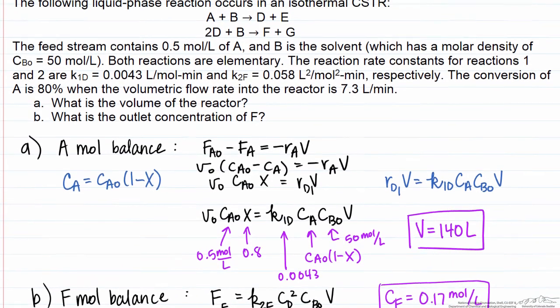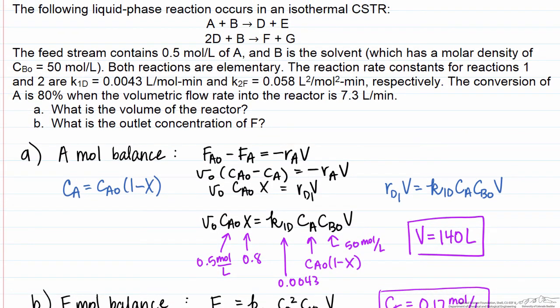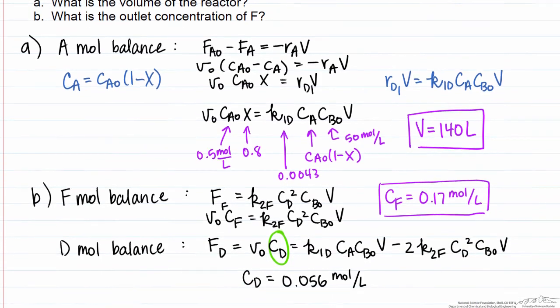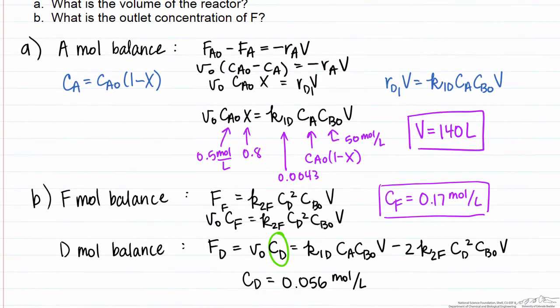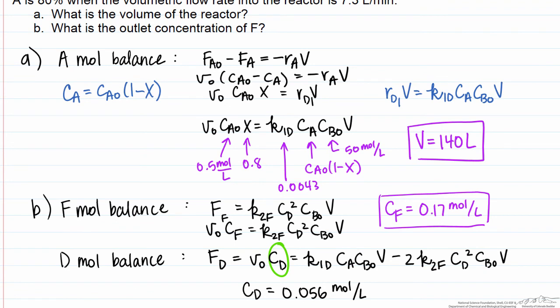To recap: we were able to solve for the reactor volume given the conversion of a reactant that participates in only one reaction — a simple mole balance on that reaction suffices. For the second part, to solve for the flow rate of product F, we needed information on an intermediate D that was involved in both reactions, which required us to account for both reactions in the mole balance.